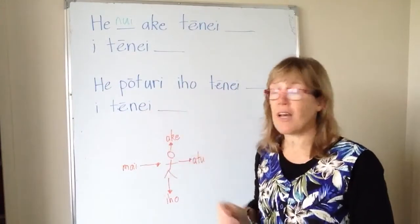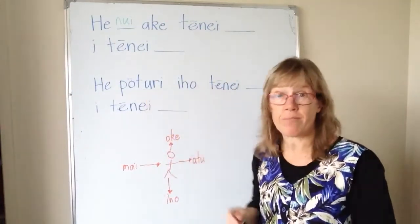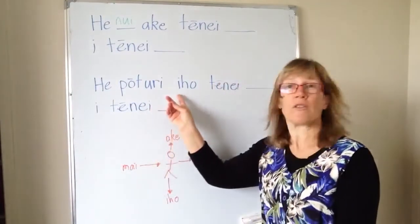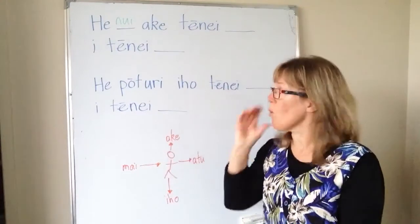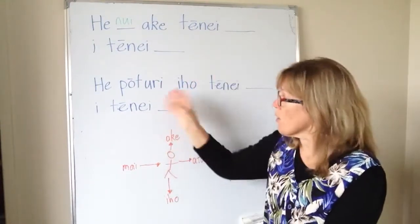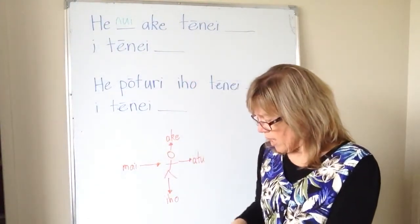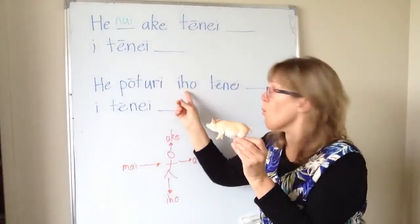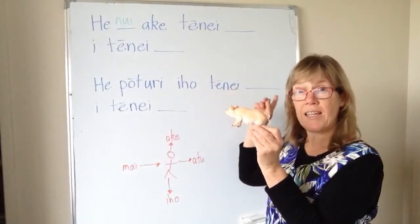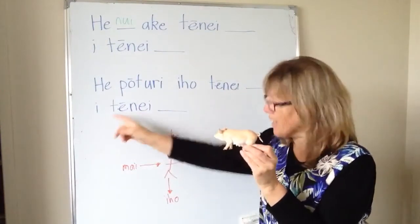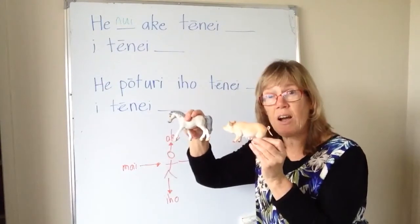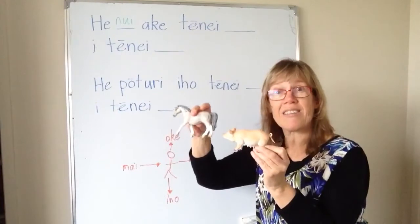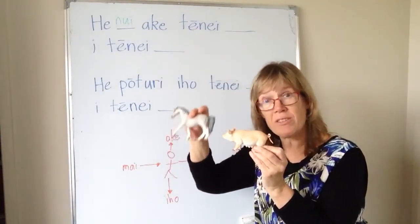So let's do smaller than, slower than. For something smaller, we use iho — something downwards. He pōtūri iho tēnei pōaka i tēnei hoiho — this pig is slower than this horse.